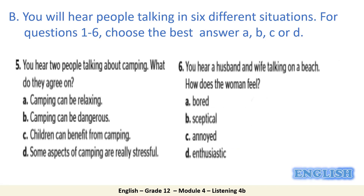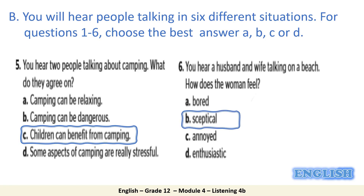Question number five: you heard two people talking about camping — what do they agree on? At the end of the conversation, the two men agreed on one thing. It is that camping is beneficial for children. The answer is C. The last question: you hear a husband and wife talking on a beach — how does the woman feel? In the audio, the woman is doubtful about the program made by the hotel. There is one word which is a synonym to doubtful: it is skeptical.